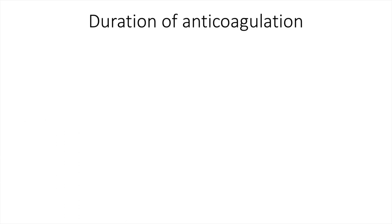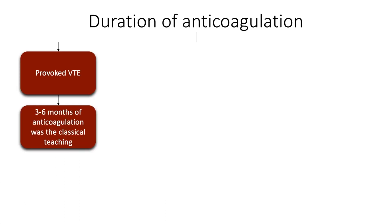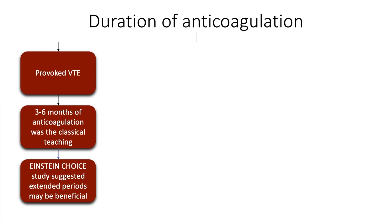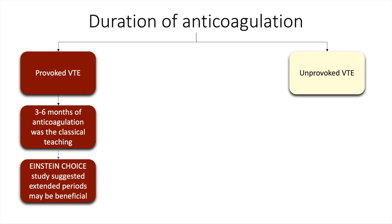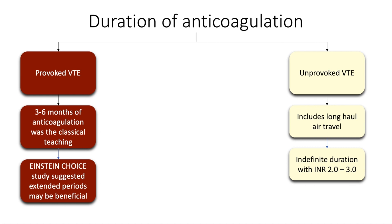The duration of anticoagulation for provoked venous thromboembolism used to be three to six months (classical teaching); however, after the Einstein Choice study, extended periods of anticoagulation may be beneficial. For unprovoked VTE, which includes long-haul air travel, an infinite duration of anticoagulation is required with a target INR between two and three.